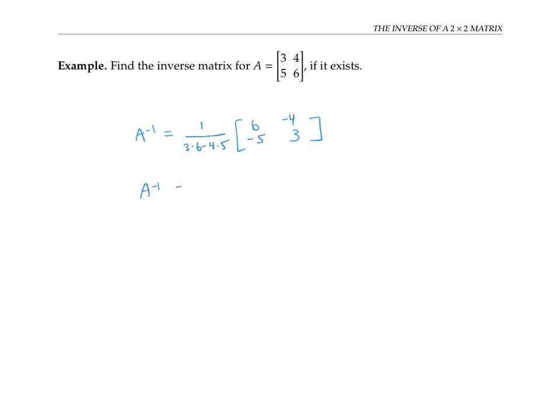So A inverse is one over negative two times the matrix. And if I bring in the one over the negative one half, that gives me negative three, two, five halves, and negative three halves. That's exactly what we got when we solved this problem before.